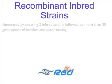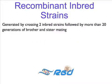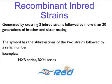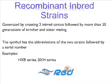Recombinant inbred strains are generated by crossing two inbred strains followed by more than 20 generations of brother and sister mating. The symbol has the abbreviations of the two strains followed by a serial number.